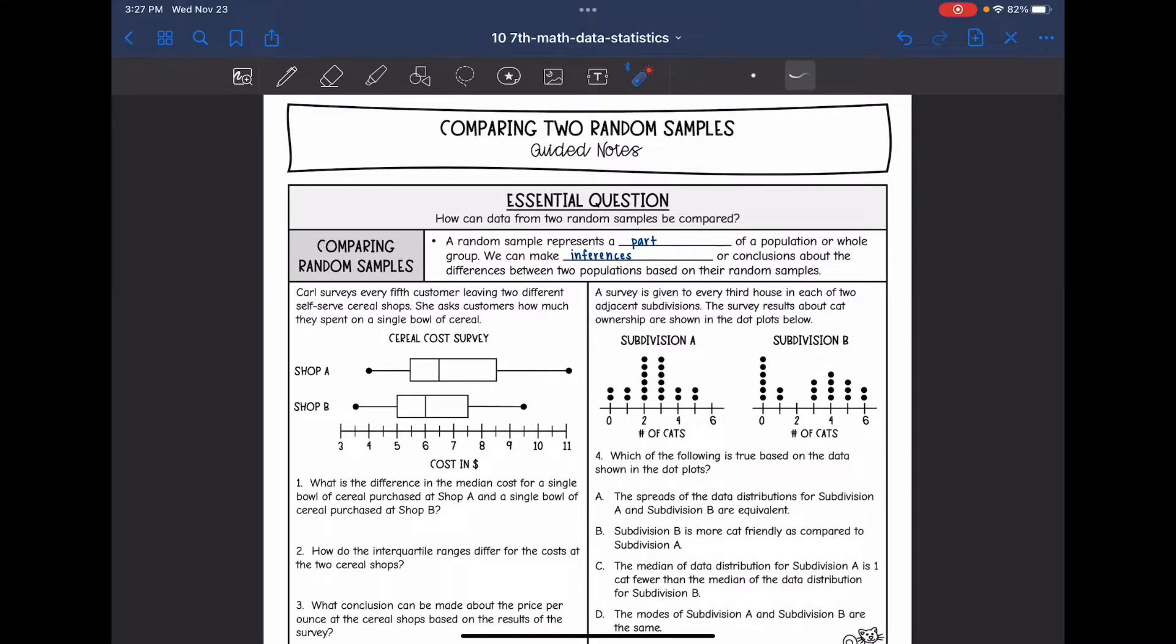Hey guys, today we're going to answer the question, how can data from two random samples be compared? A random sample represents a part of a population or a whole group. We can make inferences or conclusions about the differences between two populations based on their random samples.